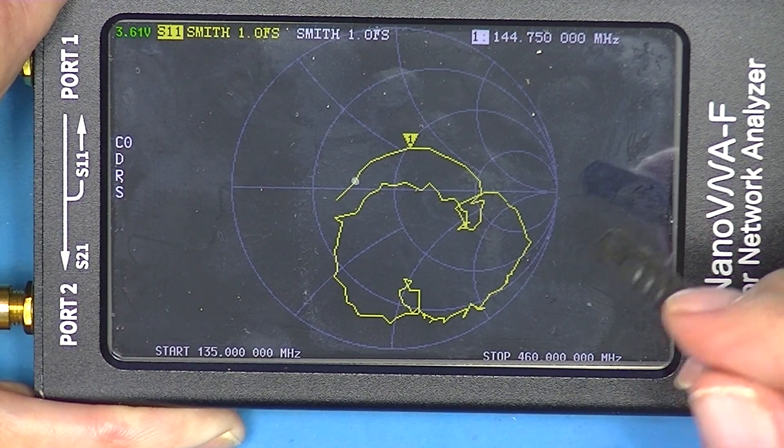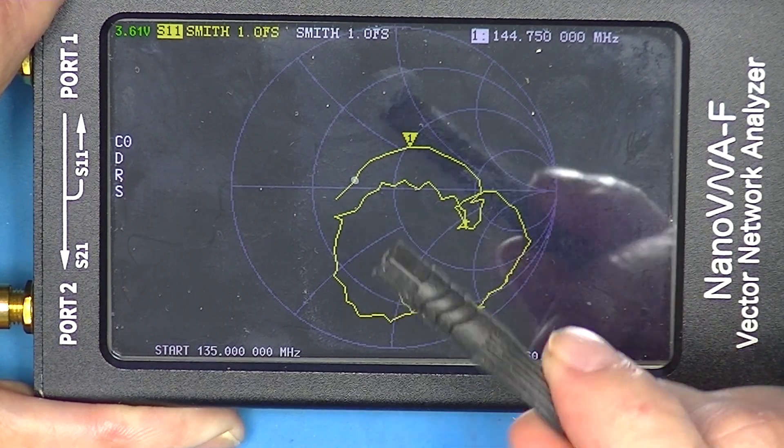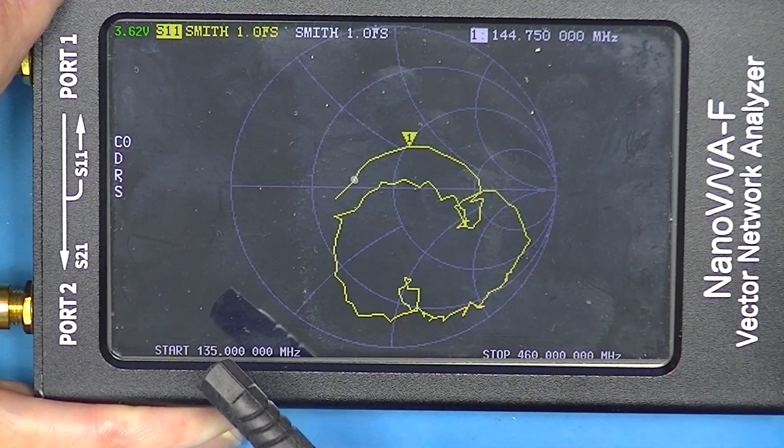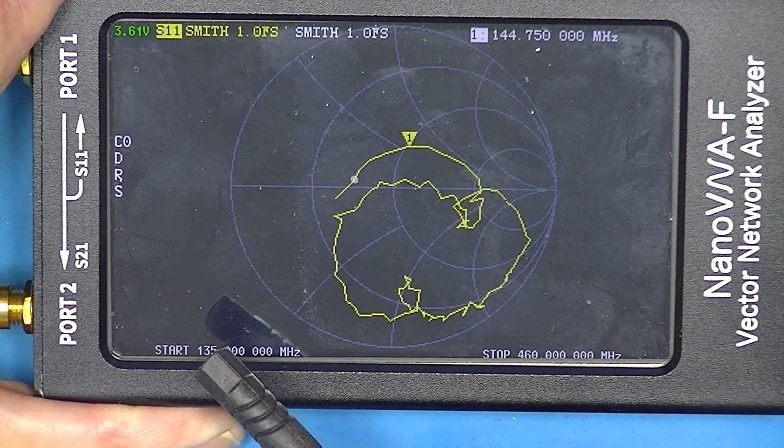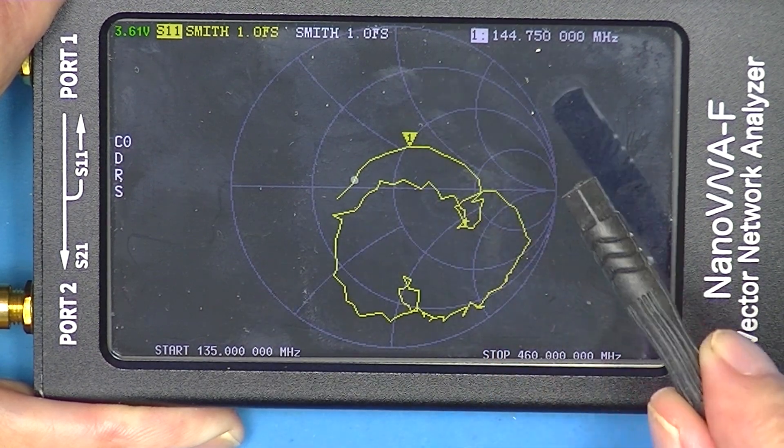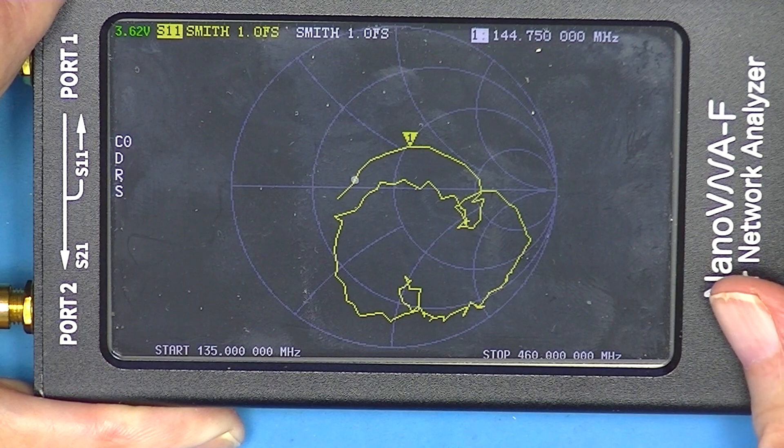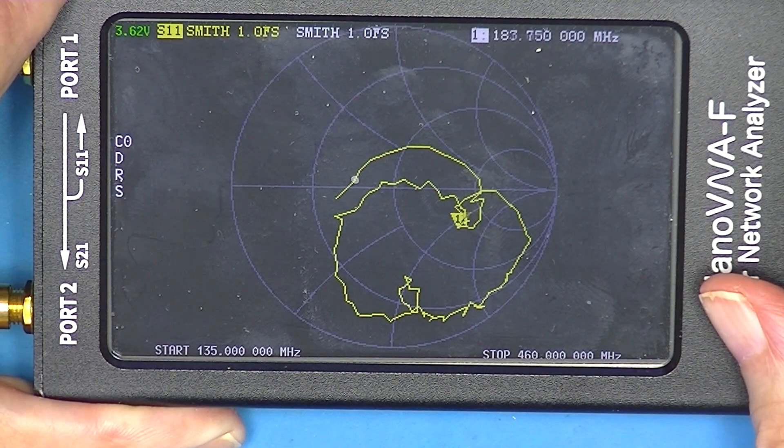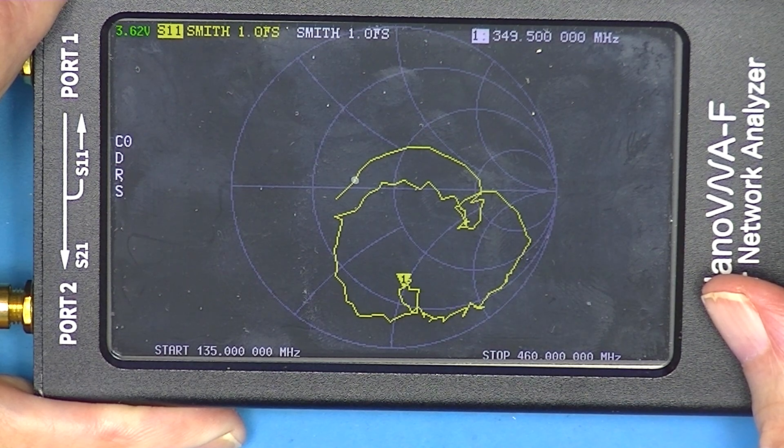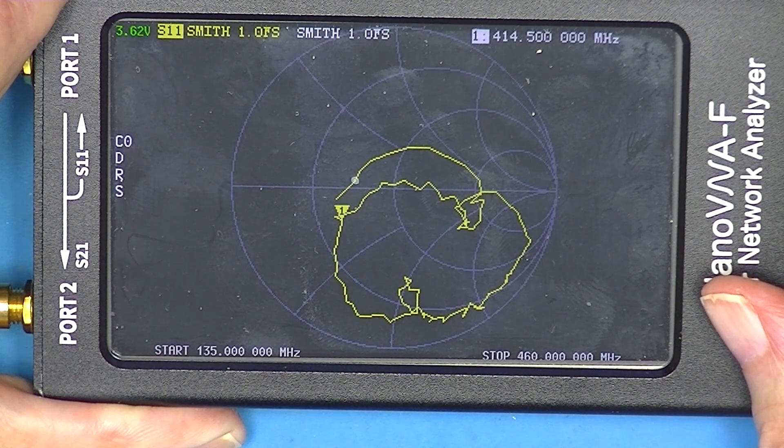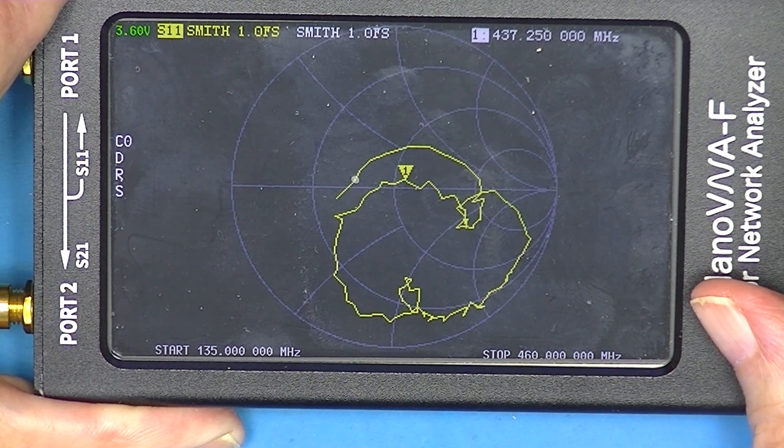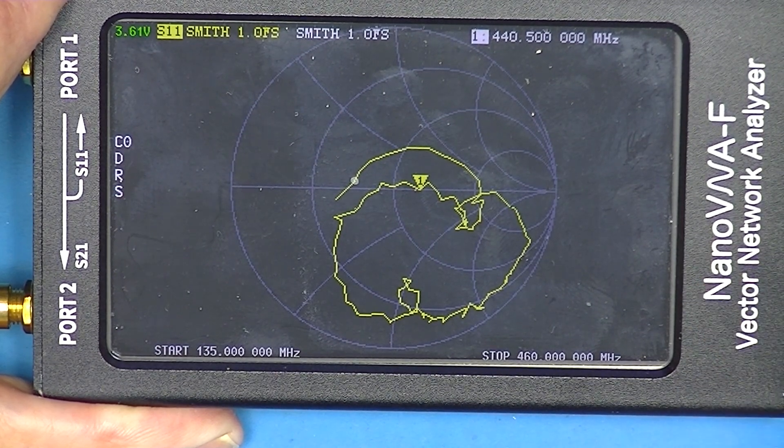Here's our Smith chart. Doesn't look too good. 50 ohms is right here. So this is 144. And there's 440.